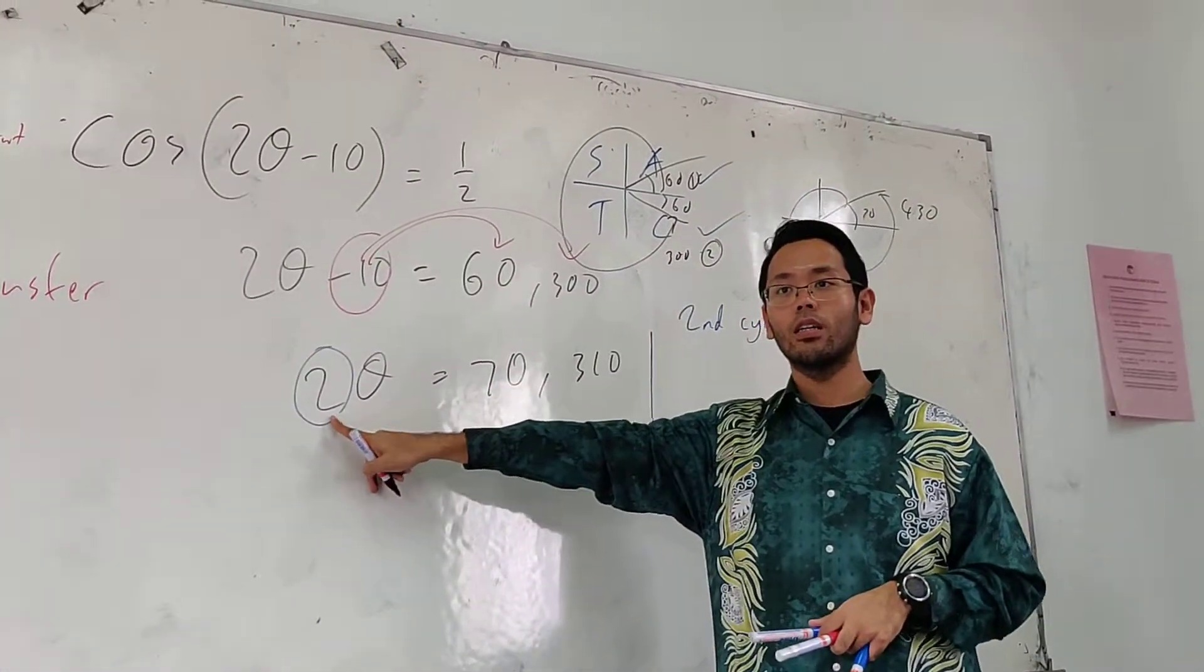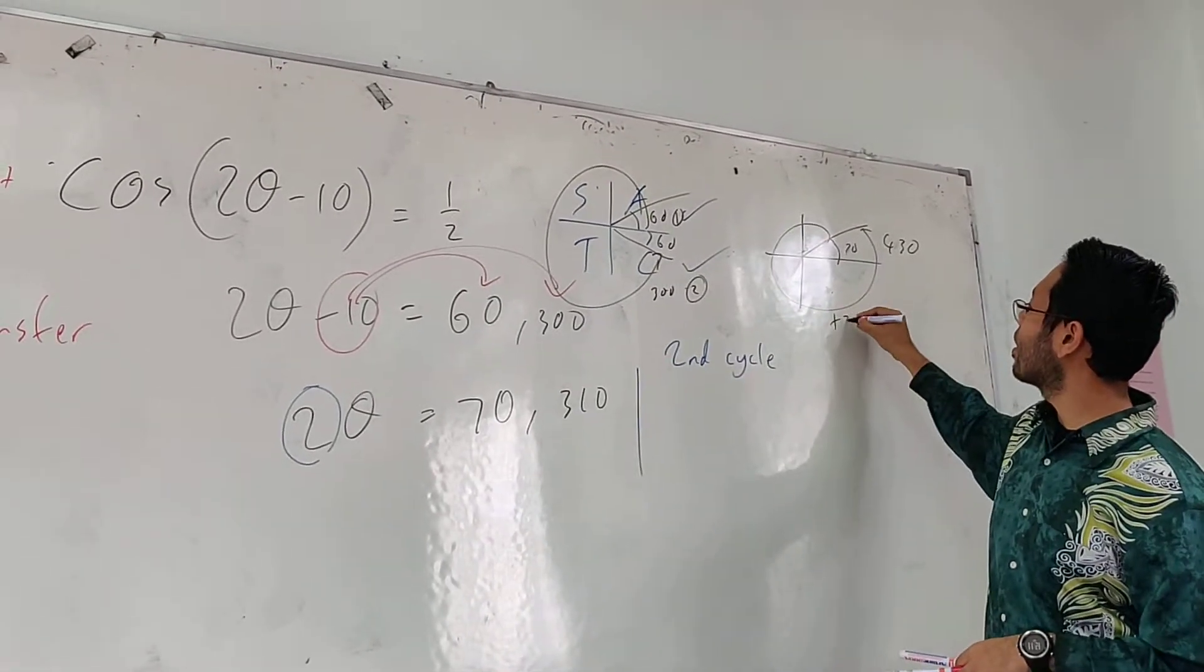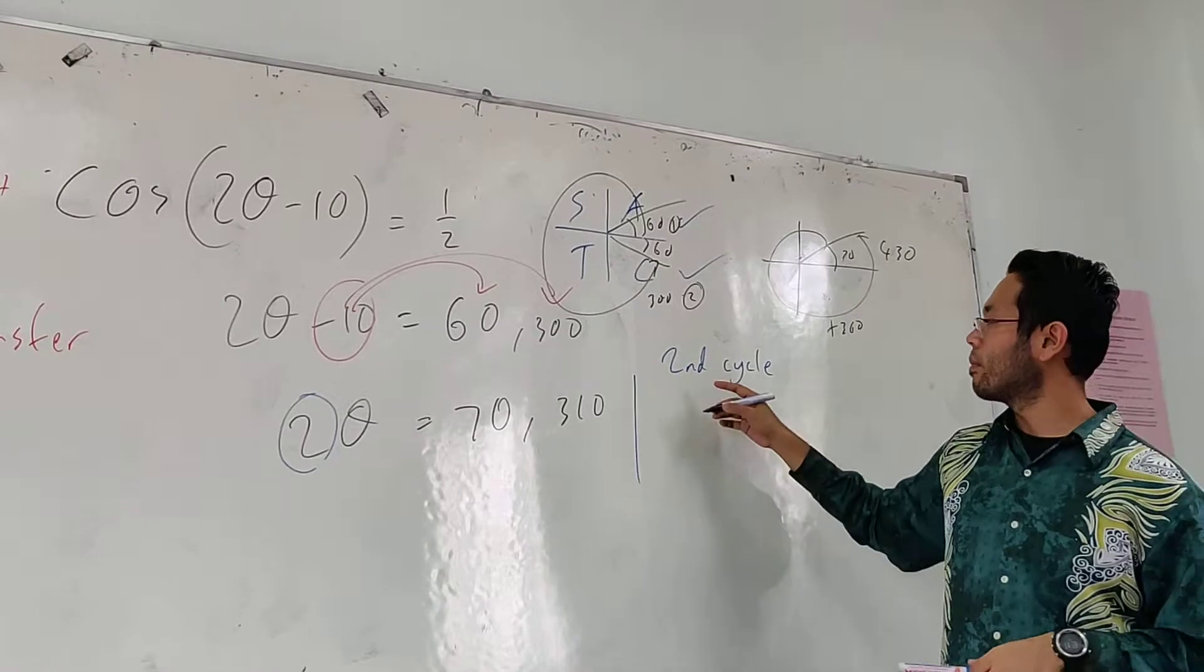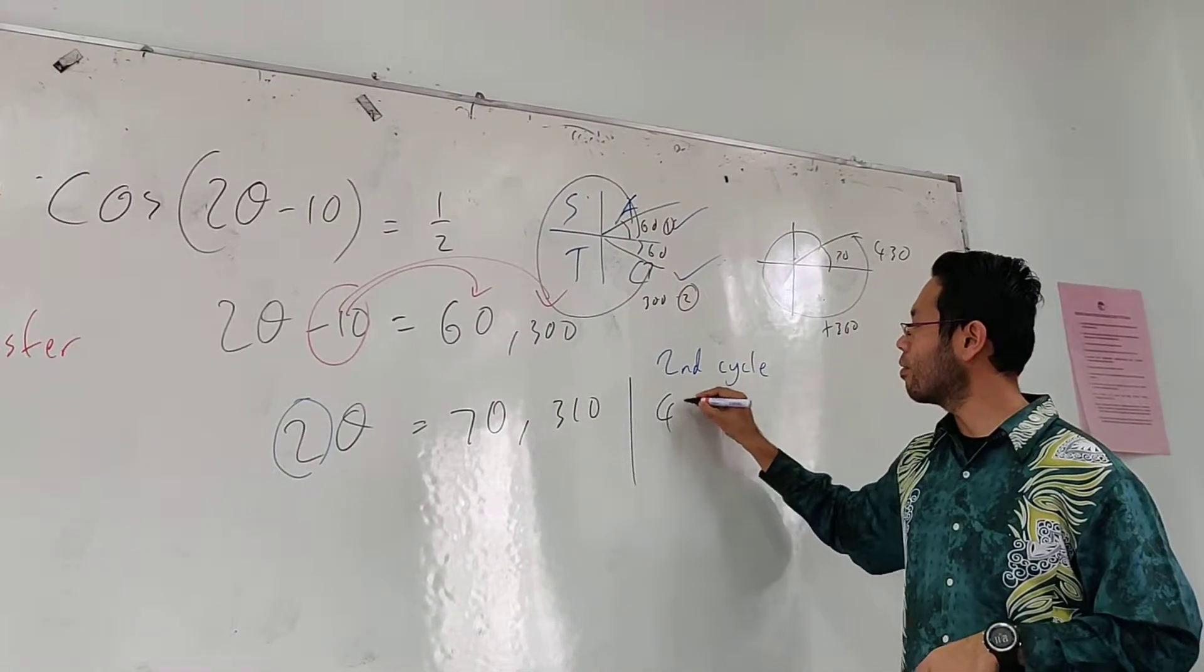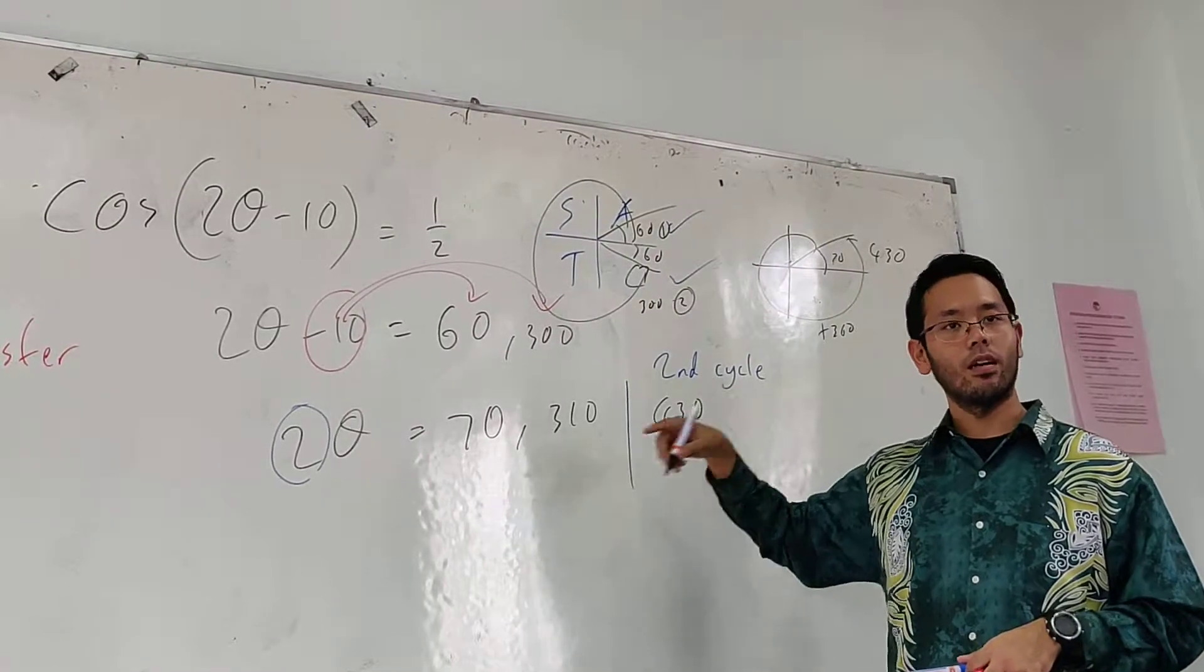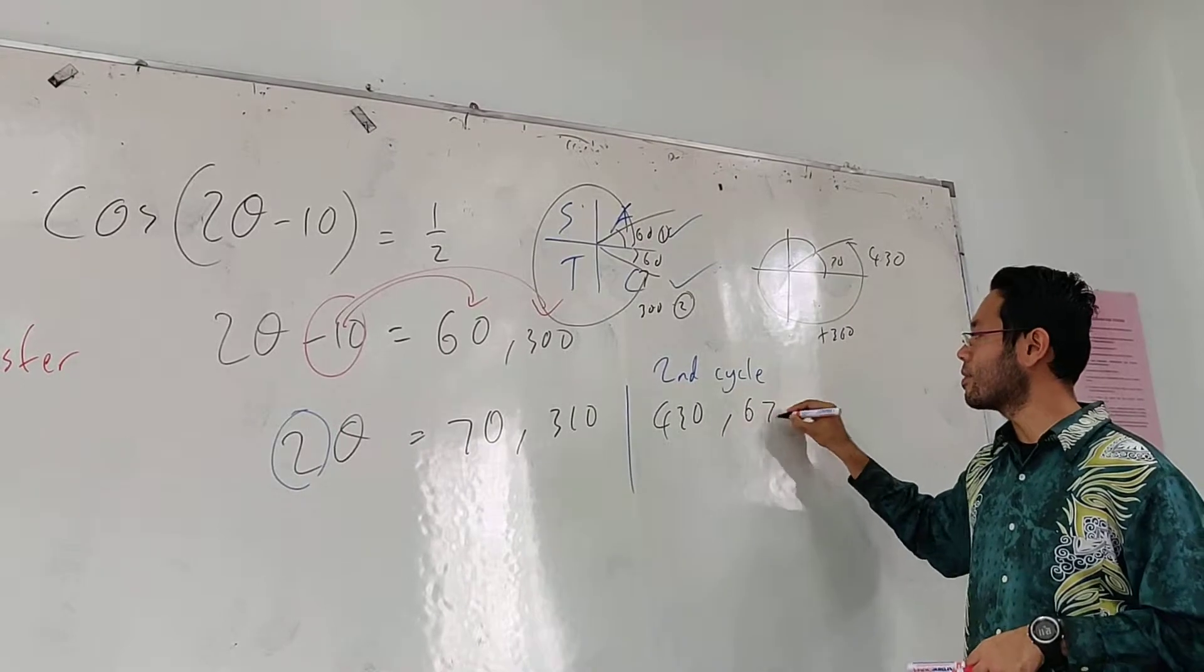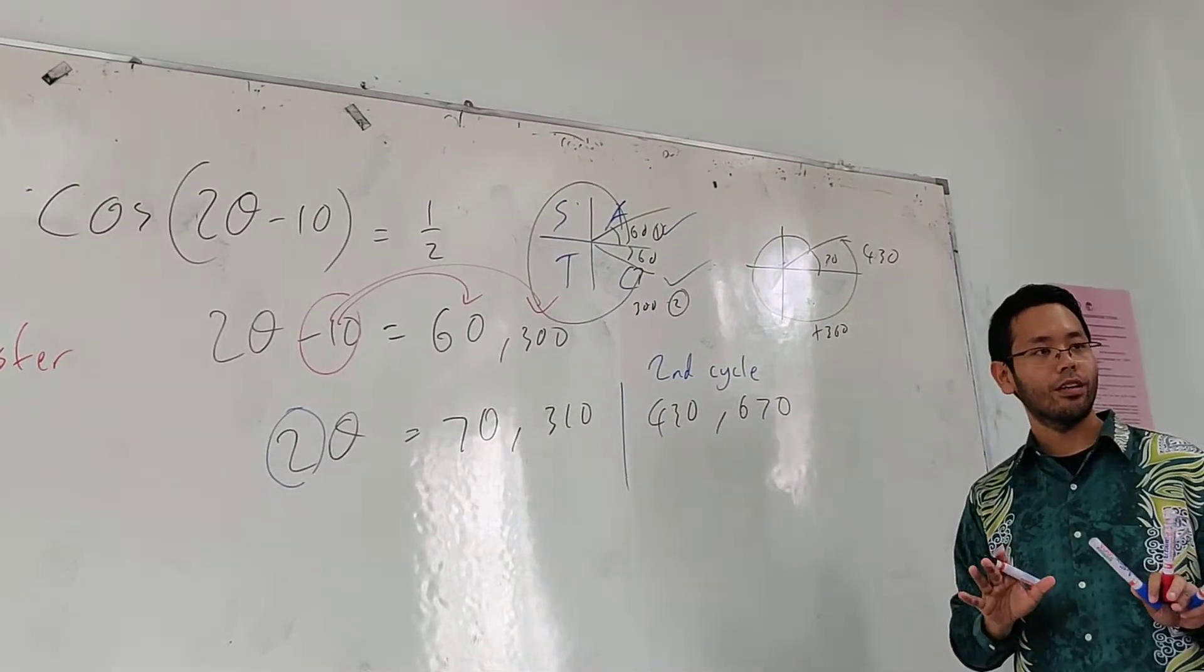There are two theta. 360 plus 70. 420. Plus 360. Plus 360. So here is 430. So what about 310? Plus 360. 650. 670. 670. 670. Are you okay? Yes.